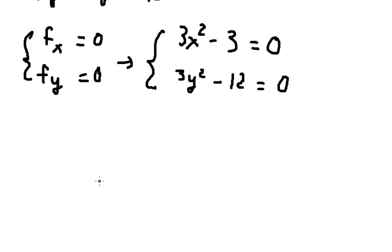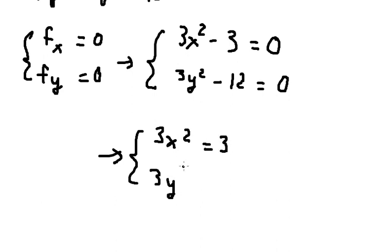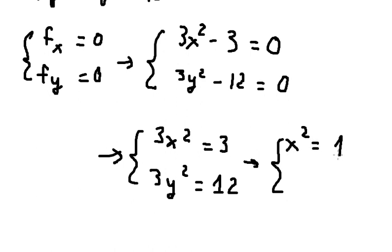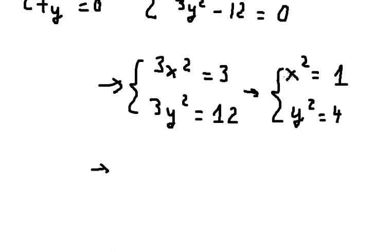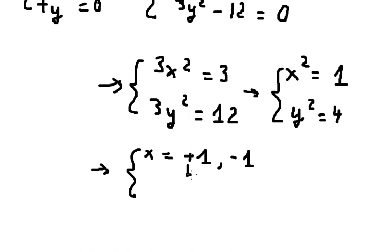We put both expressions on the right side: 3X squared equals 3, and 3Y squared equals 12. Now we divide both sides by 3. We get X squared equals 1 and Y squared equals 4. Taking square roots of both sides gives X equals positive or negative 1, and similarly Y equals positive or negative 2, because of the even power we get both positive and negative solutions.